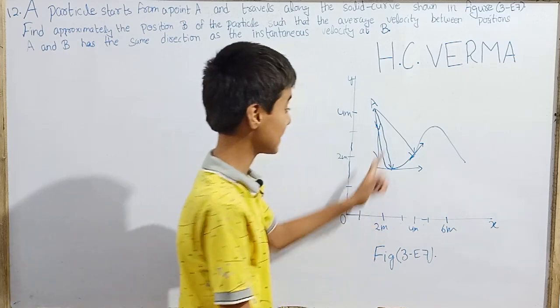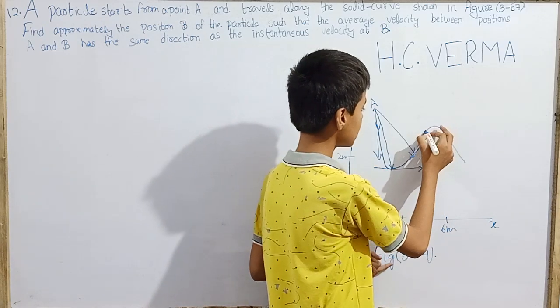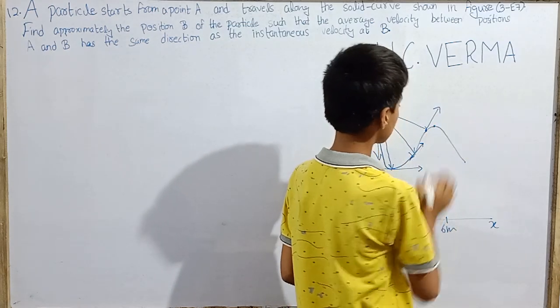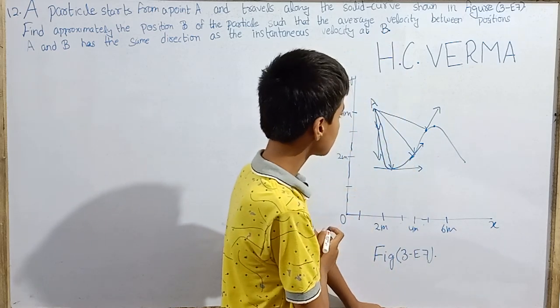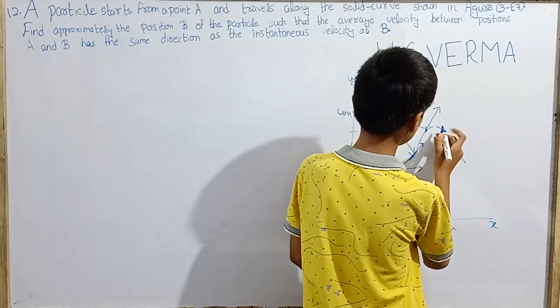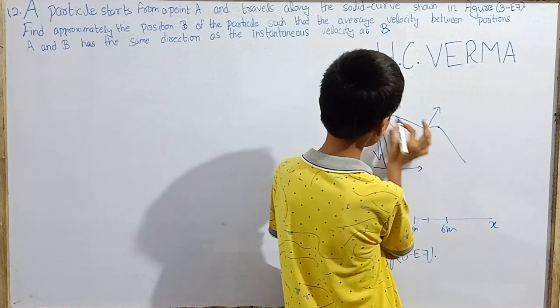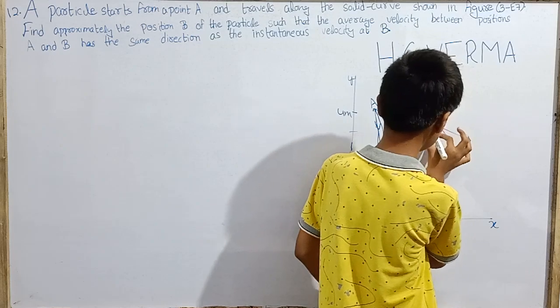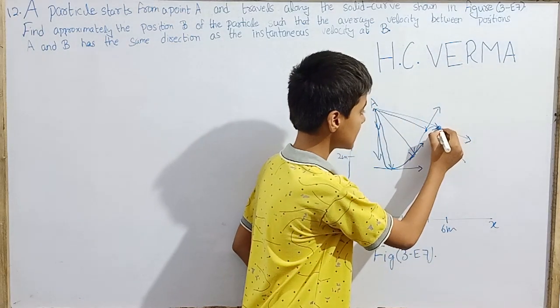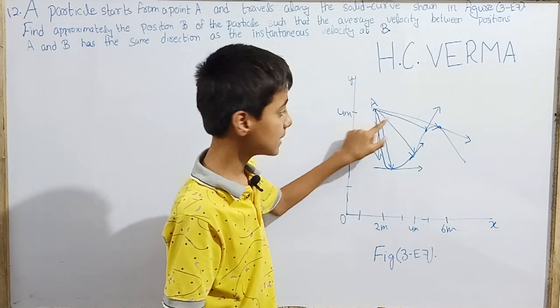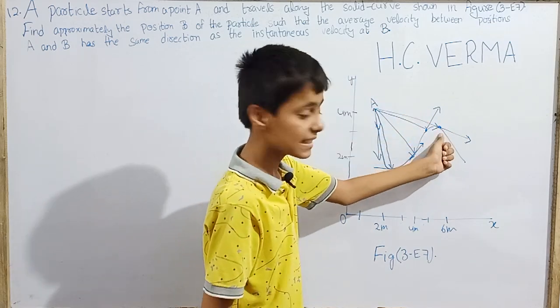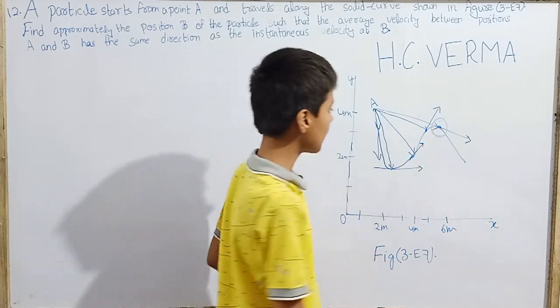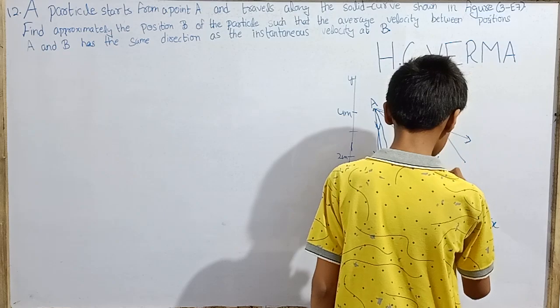Let's see here. If I place something at this point, average velocity is here and instantaneous velocity tangent to the path is here. Average velocity between this point and this point is in this direction, and instantaneous velocity at this point is tangent to the path, so that is also in this direction.